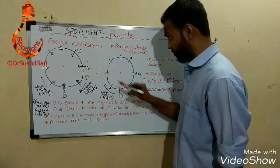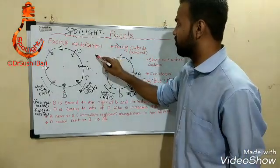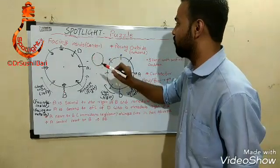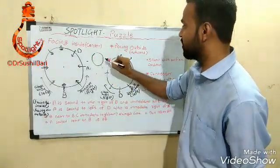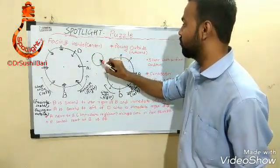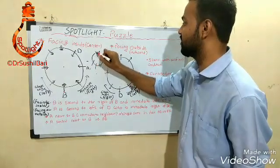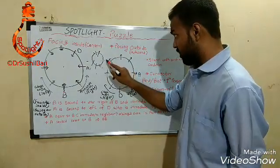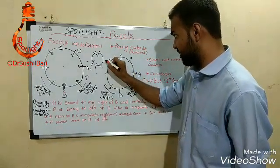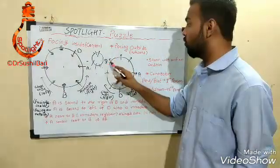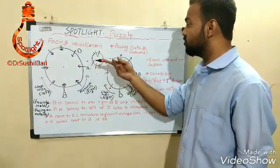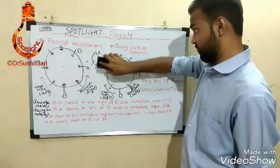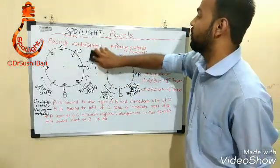Many students draw the circle incorrectly. If the question talks about eight persons sitting, they just draw positions one through eight randomly. If D is placed and the question asks who is opposite to D, you can't solve it because you haven't drawn the puzzle diagram in the proper way.